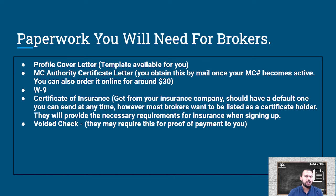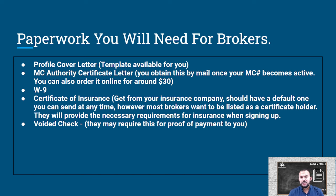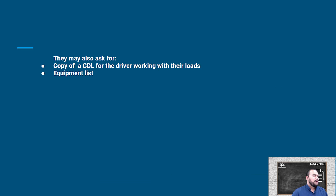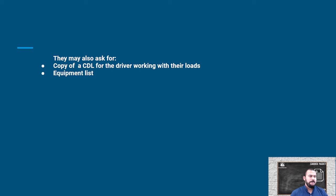To recap: the items you want to have are your profile cover letter, your MC authority certificate letter, your W-9, your certificate of insurance, a voided check, a copy of the CDL (front and back) for the drivers working with brokers, and an equipment list. The carrier packet is fairly simple. I hope this was very helpful — this is something you can start putting together now, no need to wait.